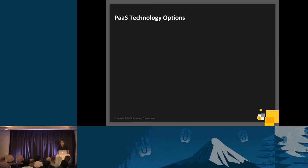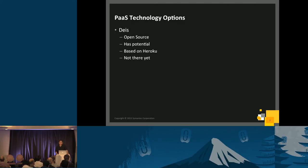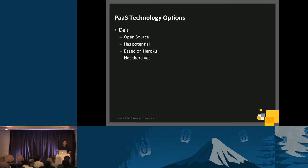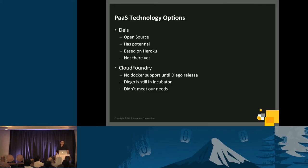PaaS technology options — we evaluated around six options. First, Deis. It's an open source PaaS project, really new, completely open source and based on Heroku, but it's not there yet. It uses a CLI with everything built into a huge application on the server with no way to expand. It works fine if you're going from a dev environment planning to deploy to Heroku afterwards — you can use it to play around — but not for production deployment. It has potential and active development, but it wasn't what we needed.